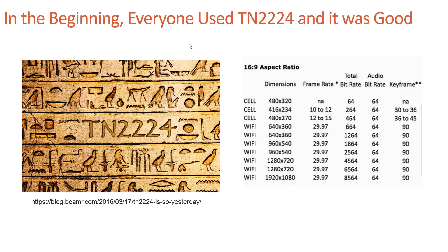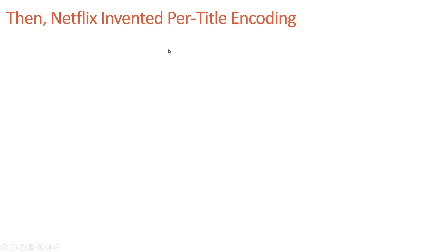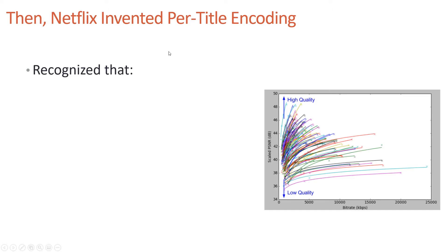In the beginning of adaptive streaming, every producer used a fixed encoding ladder, and the encoding ladder from Apple Tech Note TN2224 was very popular, immortalized in Beamer's blog post. Then Netflix invented per-title encoding in a blog post released in December 2015.